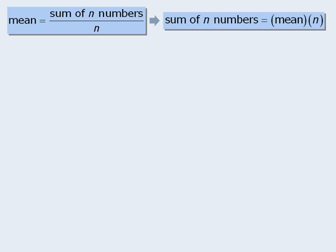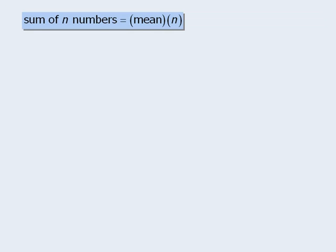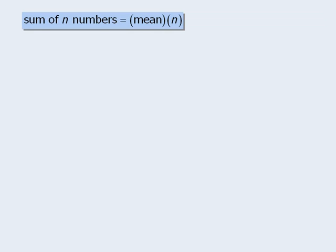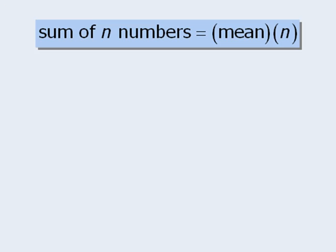This formula tells us that the sum of the n numbers in a set will be equal to the mean of those numbers times n. This formula is very useful for solving many GRE questions related to average, so be sure to consider using it when you encounter a question involving average.